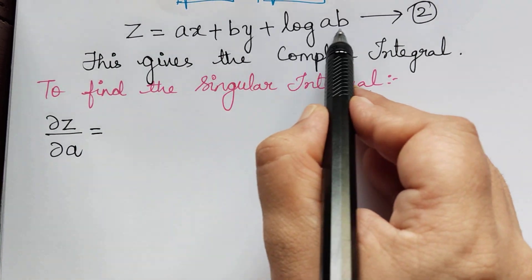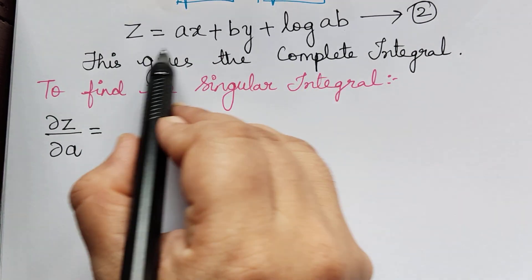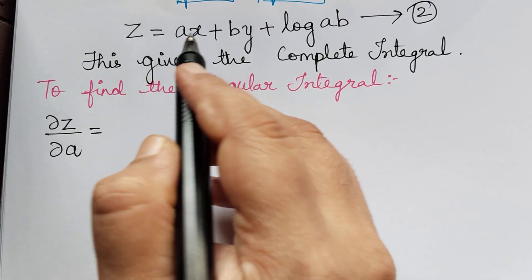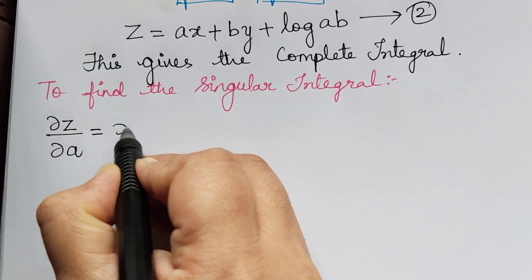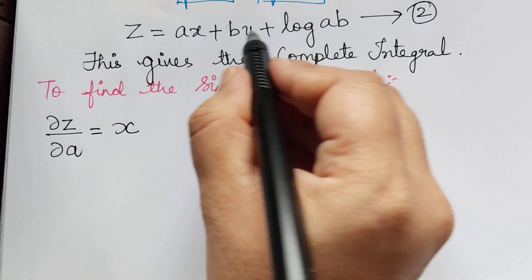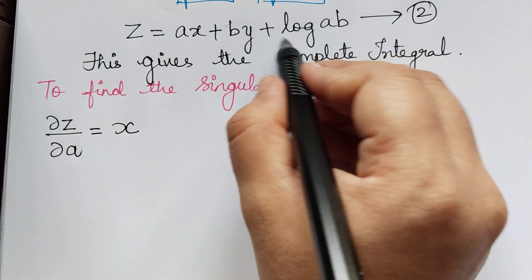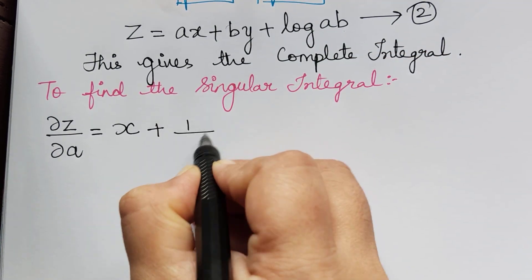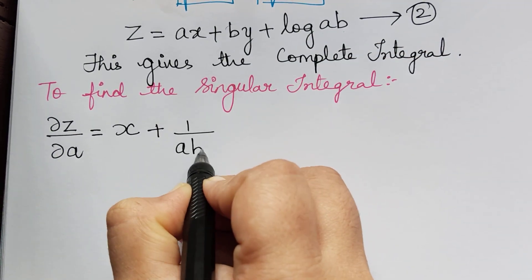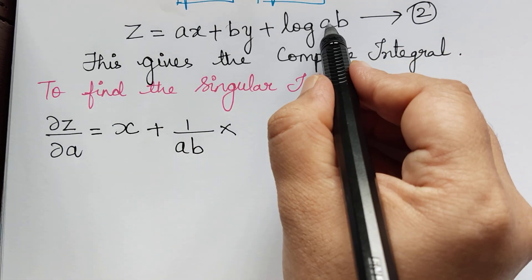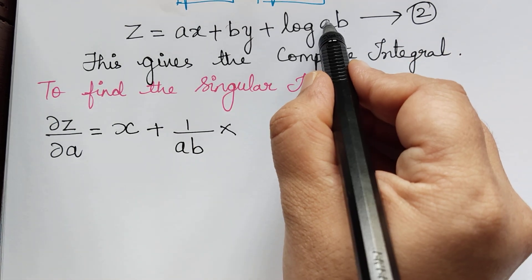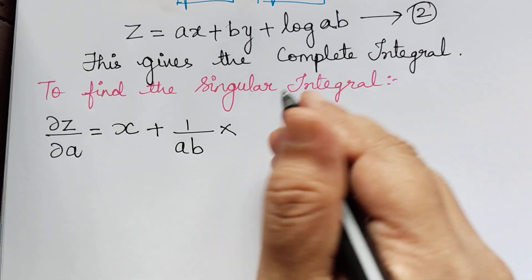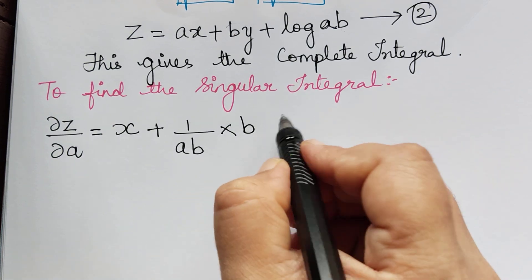When z is partially differentiated with respect to a, the differentiation of ax is x (since the differentiation of a is 1). The differentiation of log(ab) is 1/(ab) multiplied with b. Since we are differentiating with respect to a, b is treated as a constant, so b cancels and we get x + 1/a.